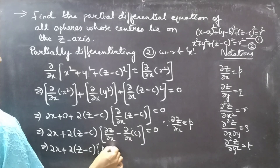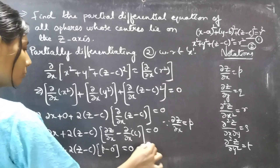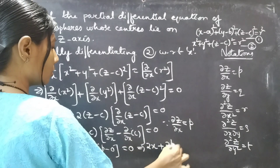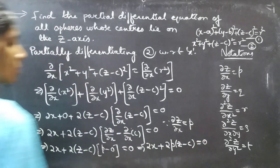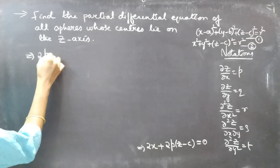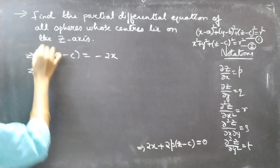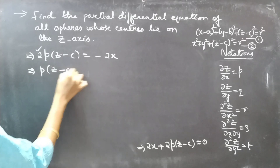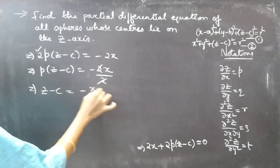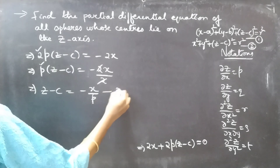Since ∂c/∂x = 0 (c is a constant) and we use the notation ∂z/∂x = p, we get: 2x + 2(z − c)·p = 0. Rearranging, z − c = −x/p. Consider this as Equation 3.